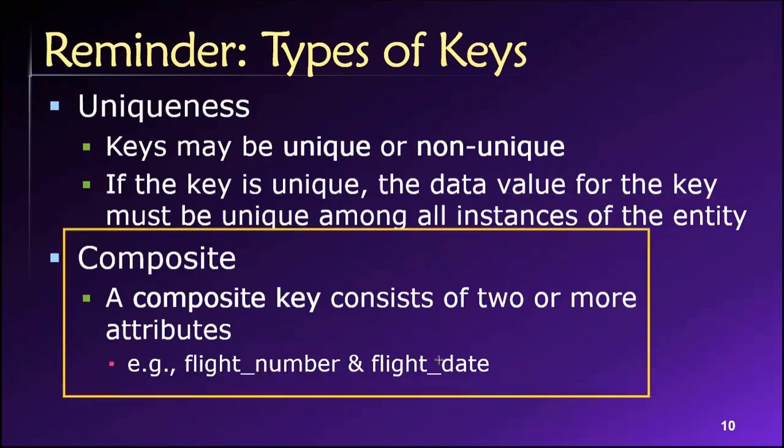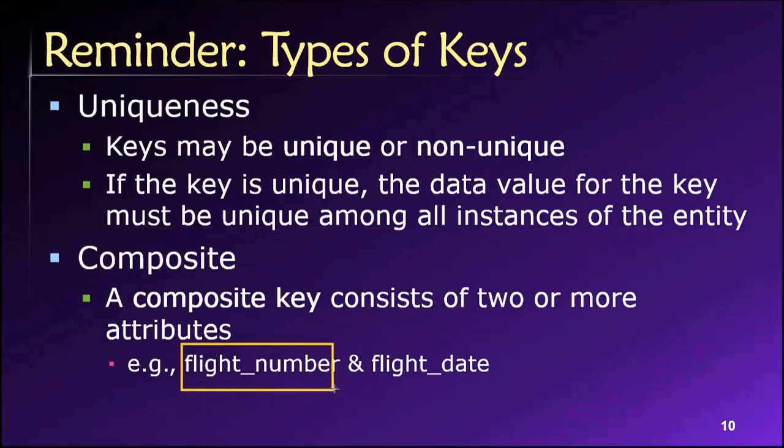Then you remember composite keys. These are keys that consist of a combination of two or more attributes. Common example that I used earlier in the class was the combination of flight number and flight date. And we've seen some other ones of these book author. So we can use a combination of a book ID and an author ID to keep track of which authors wrote which books. So yeah, lots of possibilities for these composite keys. They certainly serve their place and we will learn more about their usage in this part of our class.